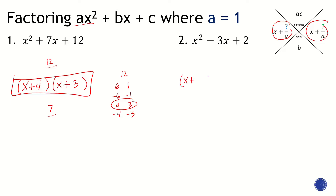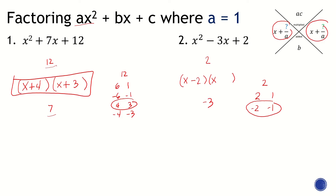Let's go to the next example. We need X plus something, times X plus something. We have the product as 2 and the sum as negative 3. Numbers that multiply to 2 are: 2 and 1, negative 2 and negative 1. The pair that gives a sum of negative 3 is negative 2 and negative 1. So the answer is X minus 2, times X minus 1.